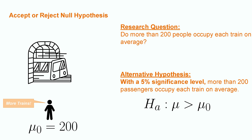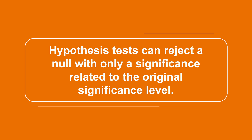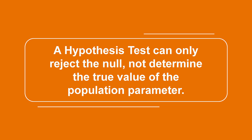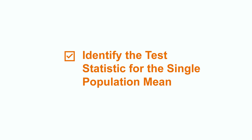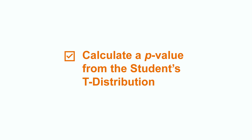This brings us to an important final point: hypothesis tests can reject a null only with a significance related to the original significance level alpha. One can, of course, report a p-value, but by how much the p-value surpasses the original significance level does not impact the result of a test. Moreover, a hypothesis test can only reject the null, not determine the true value of the population parameter. We cannot necessarily say that the population parameter for train ridership is 215 people per car, but only that we are certain to a 5% level that there are more than 200. Over the course of this lesson, we reviewed the general structure of hypothesis tests, introduced the test statistic formula for a single population mean, and used an example scenario to walk through a full hypothesis test including finding the proper p-value and testing against the significance level. Thank you for working through this hypothesis test calculation with me. For more specific practice on other sample statistics, Chegg has a series of videos available in this series to dive deeper into hypothesis tests.